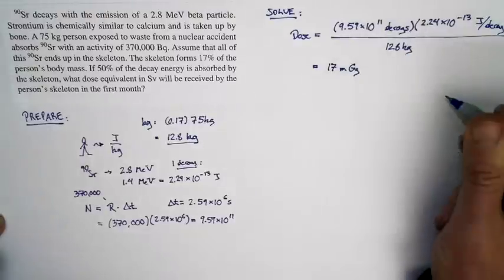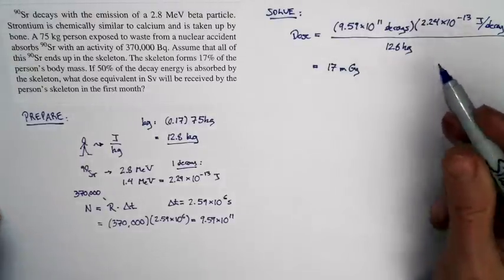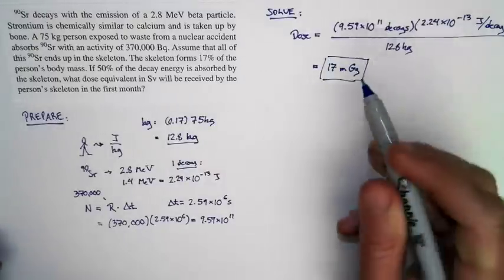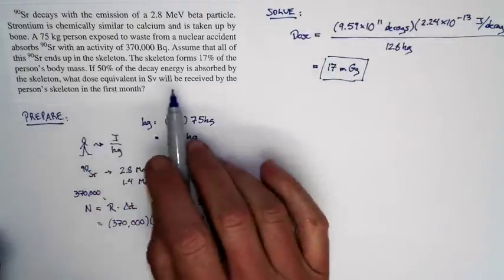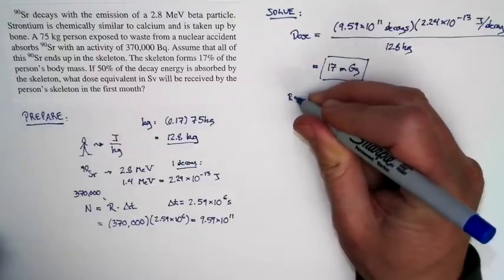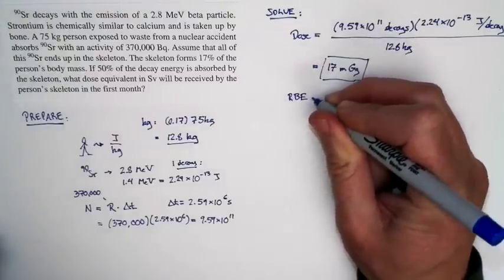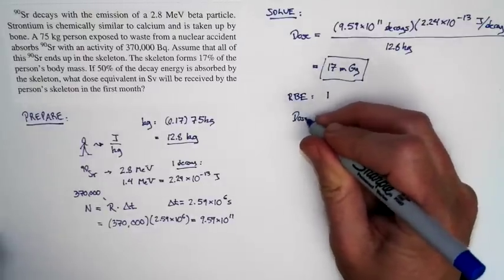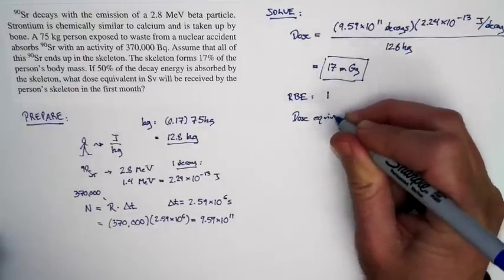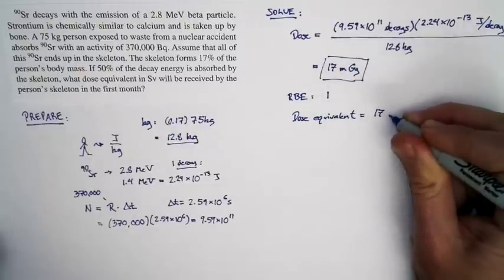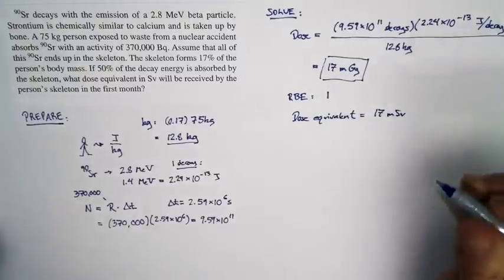And at this point we've rounded off to two significant figures. I've been carrying around extra decimal places, but now we're ready. But the question didn't ask for the dose, it asked for the dose equivalent in sieverts. Now the relative biological effectiveness for beta particles, which are just electrons, is 1. So that tells us that the dose equivalent in sieverts is just equal to the dose in grays. And so the dose equivalent is 17 millisieverts.